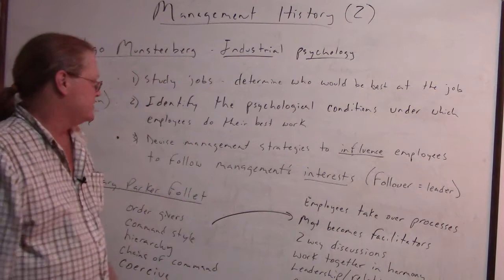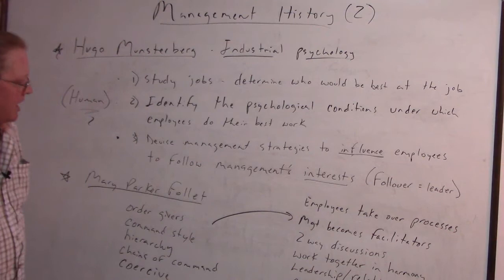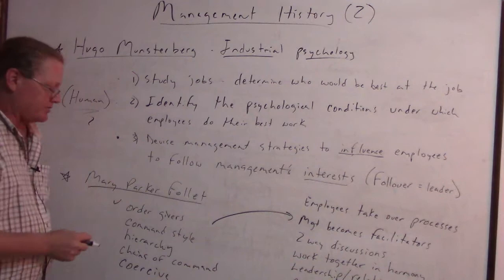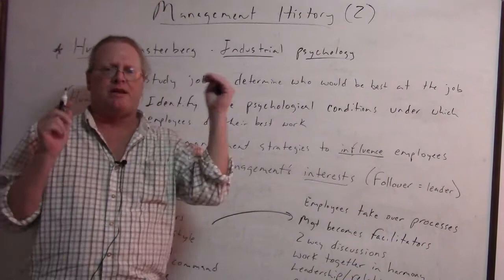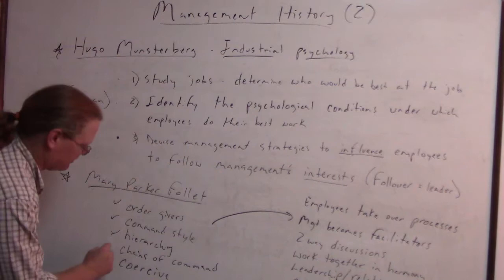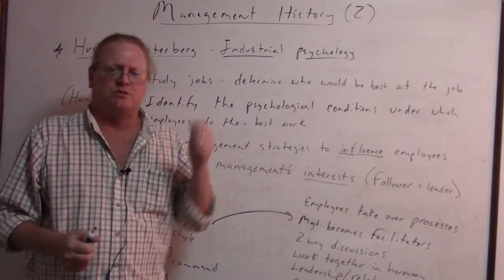Also in this era, we have Mary Parker Follett. She's pointing out that management as order givers — they just give orders, they're bosses with a commanding style — is problematic. It's a hierarchy: management is up here, employees are down there. There's a chain of command and it's often coercive. It's not fun, there's no respect, there's no 'us' — it's management versus employees. And she comes along and says this is not working; it's not what it could be.